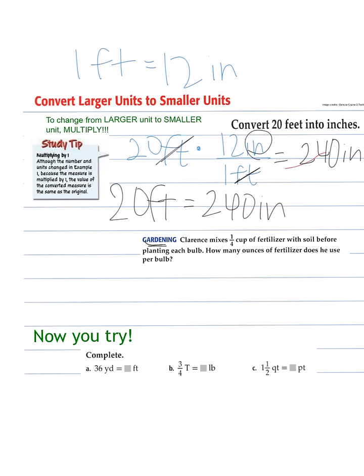We're changing our cups into ounces. We know from our chart on the page before that one cup equals eight fluid ounces. So we take our one-fourth cup, and we are multiplying it by our unit ratio of the eight fluid ounces over one cup. Our cups cancel. So now we multiply eight times one is eight over four times one, which equals two fluid ounces. So he would use two fluid ounces of fertilizer per bulb.